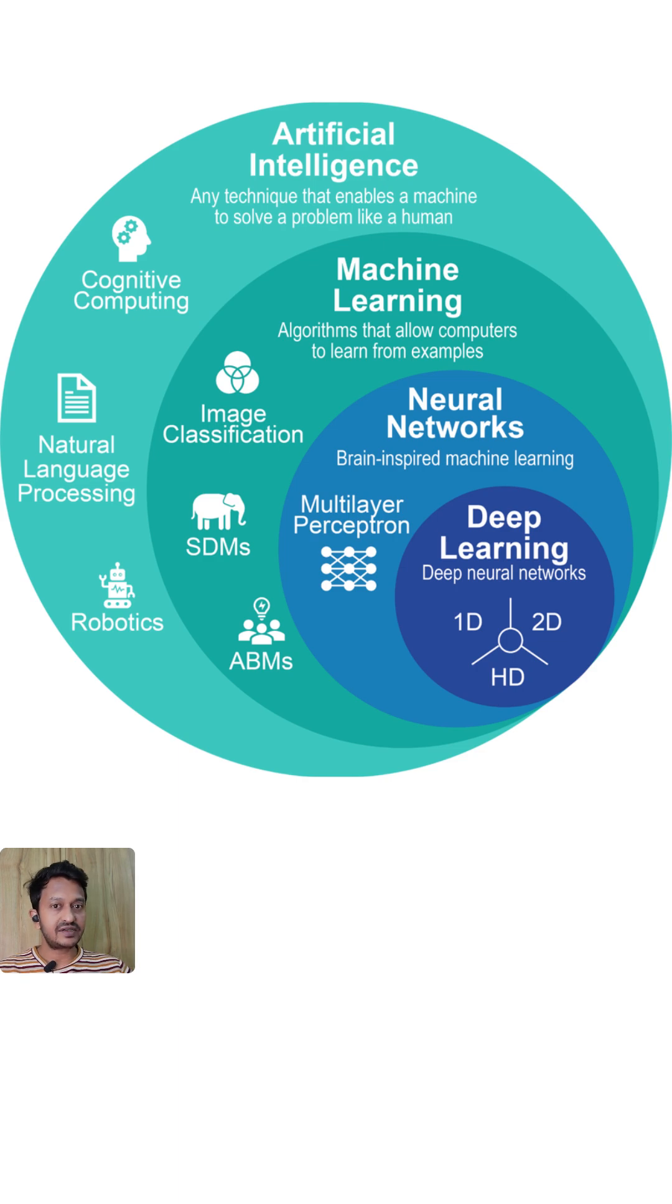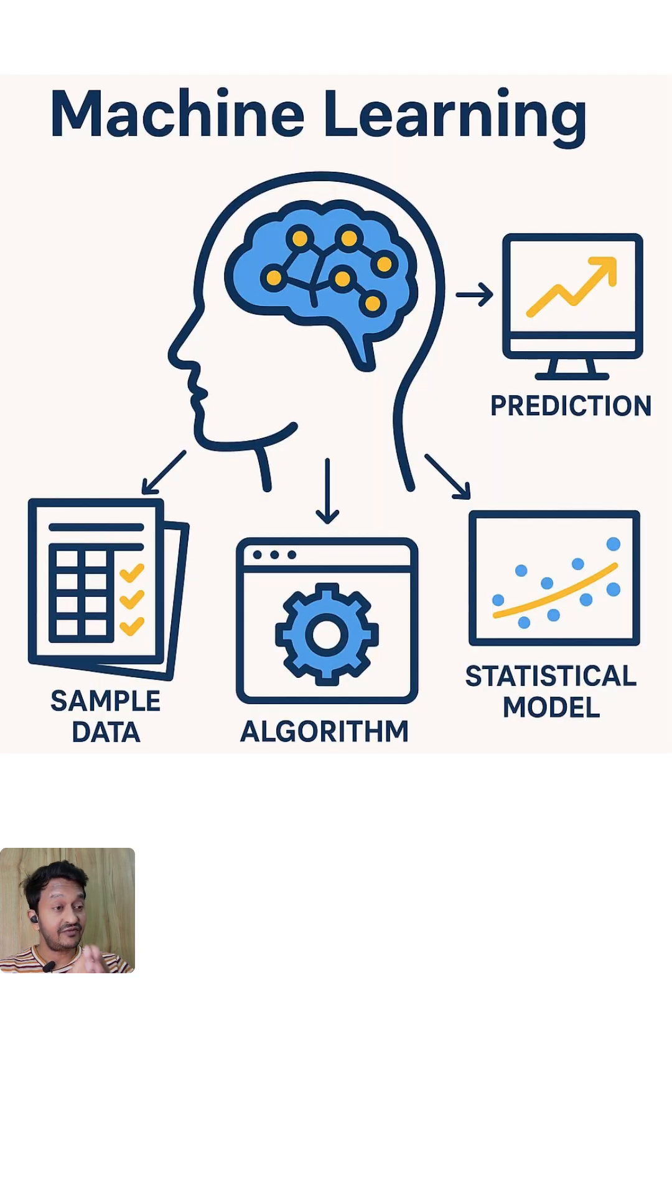So machine learning is the subfield of artificial intelligence that focuses on helping machines, or you can call computers, learn from data and improve over time without being explicitly programmed. So we don't program anything here. We give data and through data, computers try to learn the patterns.